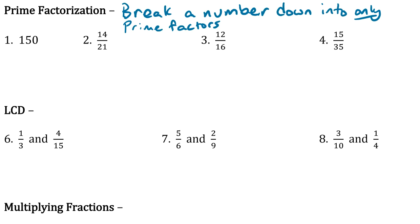So let's look at 150. To start off we're just going to see what two numbers we can possibly break it down into. Looking at it, let's say we pick 15 and 10, because I see the zero at the end so I know it's going to be divisible by 10. Any factors that you pick here are fine — I just happen to choose 15 and 10.